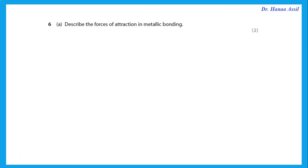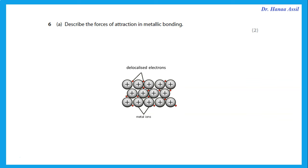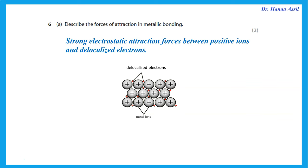Describe the forces of attraction in metallic bonding. A metal is made up of regular rows of positive ions surrounded by a sea of delocalized electrons. The metallic bonding is the strong electrostatic attraction forces between the positive ions and the delocalized negative electrons.